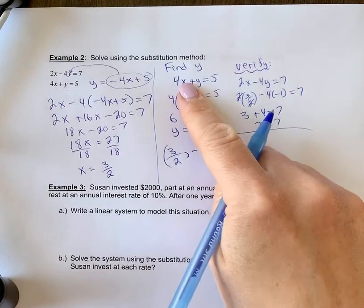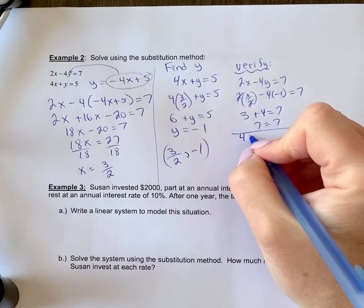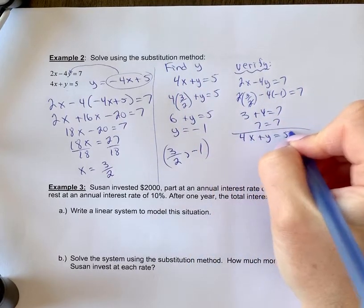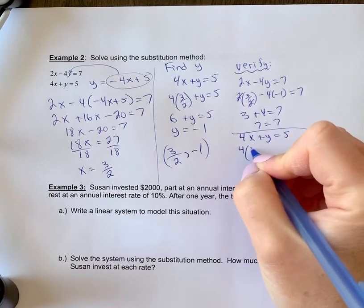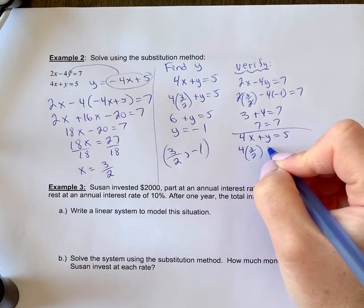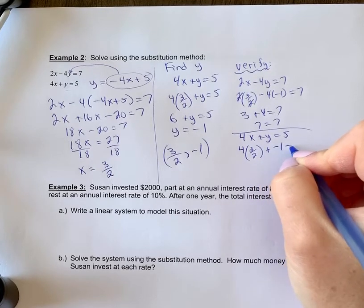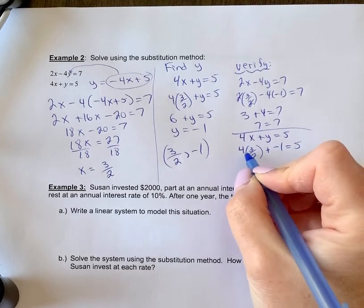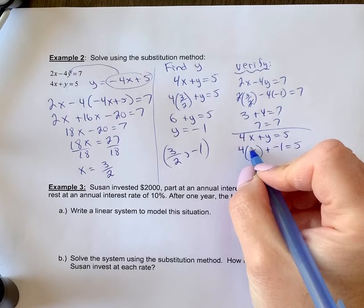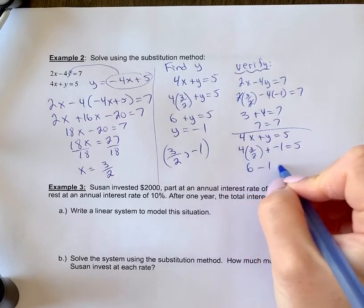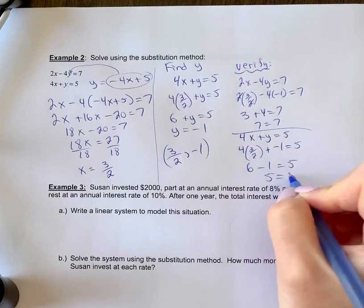Now we're going to check this equation: 4x plus y equals 5. You're going to get 4 times 3 over 2 plus negative 1 equals 5. We've done this calculation before, so 12 divided by 2 is 6 minus 1 equals 5. And 5 equals 5.